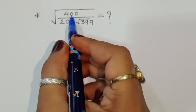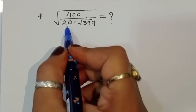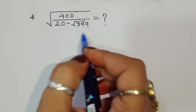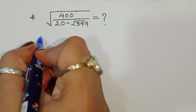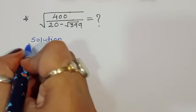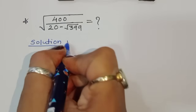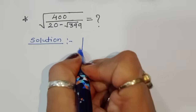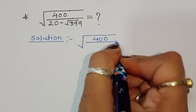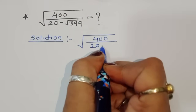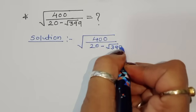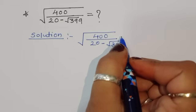The question is: find the value of √400 divided by (20 minus √399). We have to find out the value of this term. Let's see the solution.